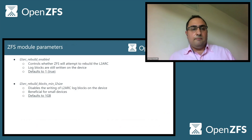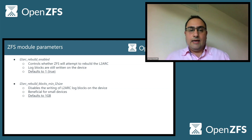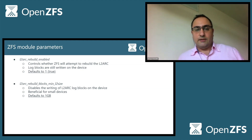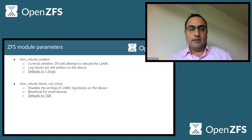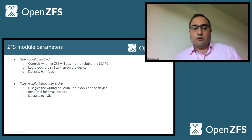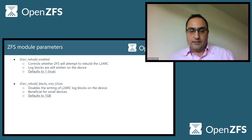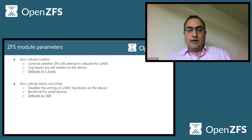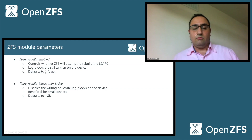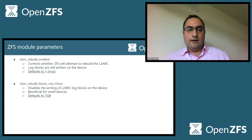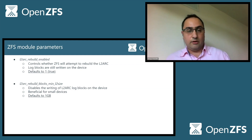In terms of tuning parameters, we introduced two of them. One controls whether ZFS will attempt to rebuild the L2ARC — this means that log blocks and metadata are still written on the device, but once the pool is imported, the L2ARC buffers are not restored. The other completely disables the writing of log blocks on the cache device, and this may be beneficial for small devices. This one defaults to one gigabyte, so if the device is smaller than one gigabyte, L2ARC persistence is disabled by default; otherwise it's enabled by default. So as soon as a cache device is present, ZFS will start writing buffers and log blocks to it, and the next time the pool is imported, the L2ARC buffers are going to be restored.